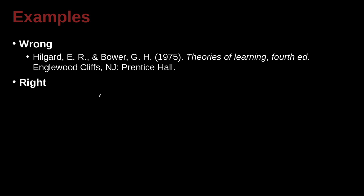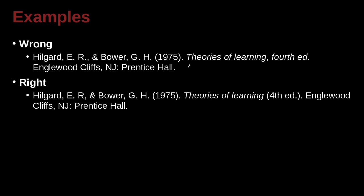Hilgard ER and Bauer GH 1975, Theories of Learning, Fourth Edition, Englewood Cliffs, New Jersey, Prentice Hall. That's looking mostly good, but there's a little detail in how you write the edition. In APA it's very specific: 'Fourth' is written with a number and 'th' — so '4th' — and then 'ed' for edition, not written out as a whole word. And you must remember to have it inside parentheses.